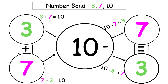Here is a second example of a combined number bond using the numbers 3, 7, and 10. On the left-hand side you have addition: 3 plus 7 equals 10, and 7 plus 3 equals 10. And on the right side you have subtraction: 10 minus 7 equals 3, and 10 minus 3 equals 7.